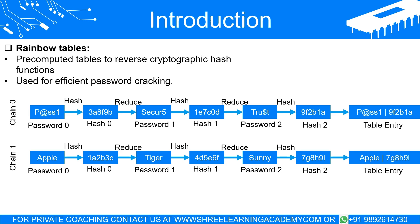To understand the concept of rainbow tables, we first need to grasp the basics of passwords and their security. When you set a password for a website or an application, it doesn't get stored as you typed it in. Instead, it goes through a process known as hashing. Hashing is a function that transforms a password into a unique fixed-size string of characters — a hash.